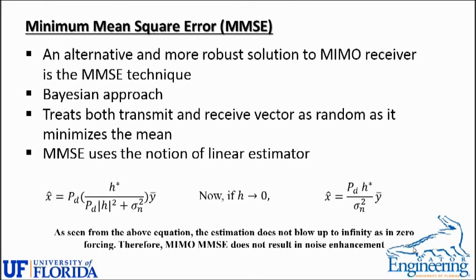The next scheme is minimum mean square error, also known as MMSE, which is a more robust alternative to the MIMO receiver. Because zero forcing amplifies noise, MMSE takes the Bayesian approach, treating both the transmit and receiving vectors as random as it minimizes the mean. MMSE uses the notion of a linear estimator. If you set the channel matrix to zero, the estimation does not blow up to infinity as it does in zero forcing. Therefore, MIMO MMSE does not result in noise enhancement, which is a key advantage.